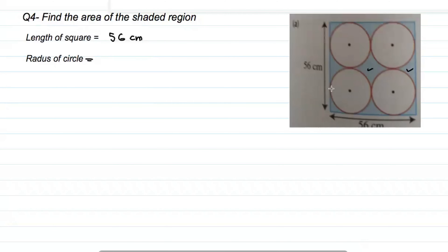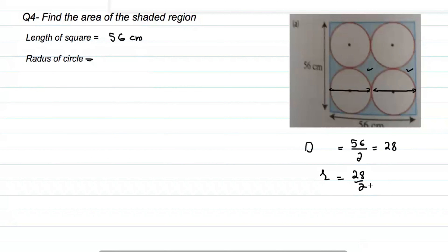This 56 cm is the diameter of the circle. First circle diameter, second circle diameter — so if we know this diameter of the circle, we write it as 28 cm. Now we have the radius of the circle. The diameter of the circle is 28 cm, so the radius of the circle is 14 cm.